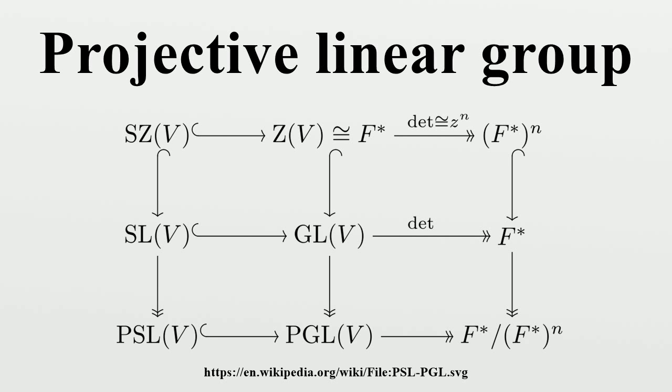PGL sends collinear points to collinear points, but it is not the full collineation group, which is instead either PΓL or the full symmetric group for n equals 2. Every algebraic automorphism of a projective space is projective linear. The birational automorphisms form a larger group, the Cremona group.